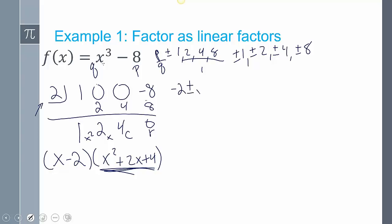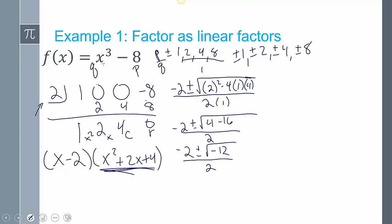So negative b plus or minus the square root of b squared minus 4 times a times c, all over 2a. So 4 minus 16, all over 2. That's negative 12. How does negative 12 reduce?